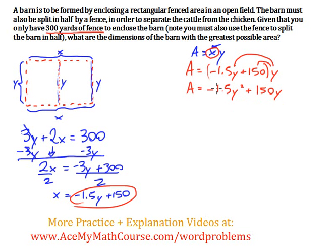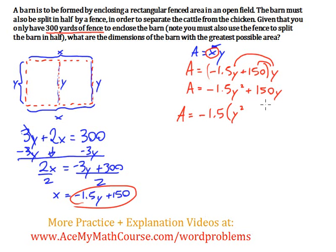Now we need to complete the square. I can factor out negative 1.5, because negative 1.5y squared divided by negative 1.5 is just y squared. So I factor that out. Then 150y divided by negative 1.5 is negative 100y.